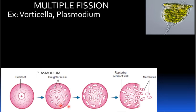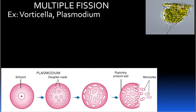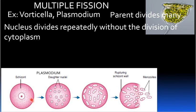In multiple fission, the parent body divides into many nuclei. The nucleus divides repeatedly without the division of cytoplasm. Then the cytoplasm divides, and each cytoplasmic part encircles the nucleus.